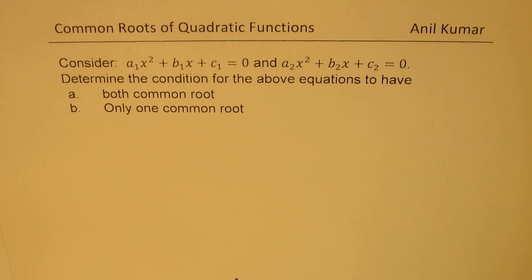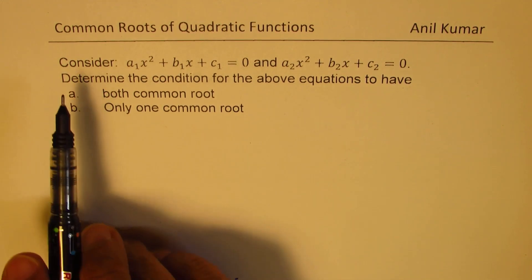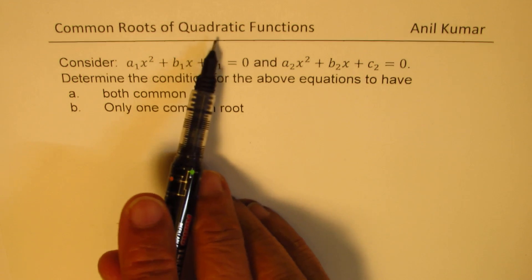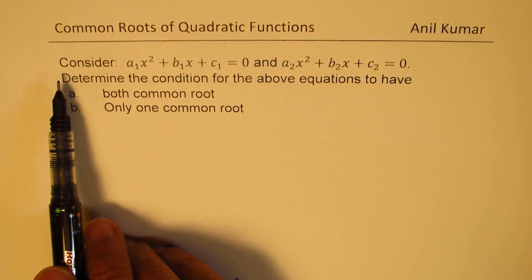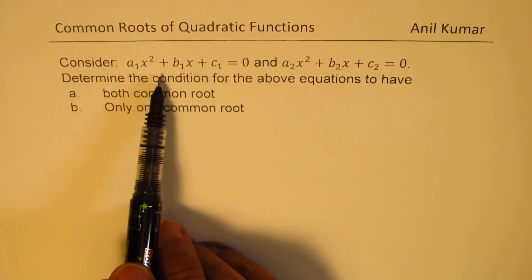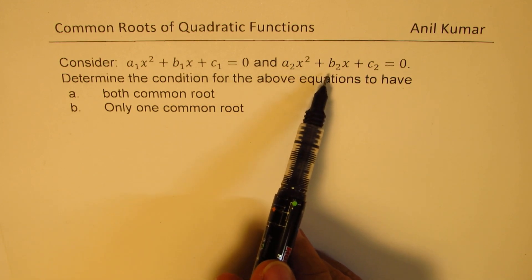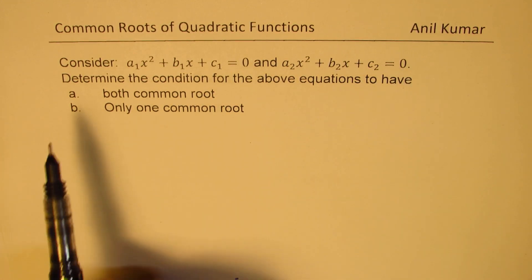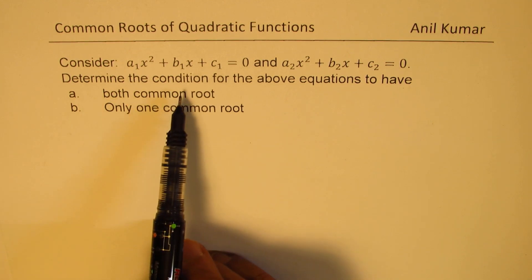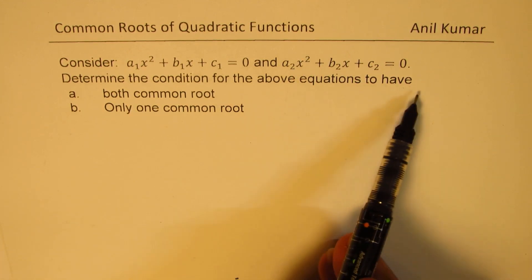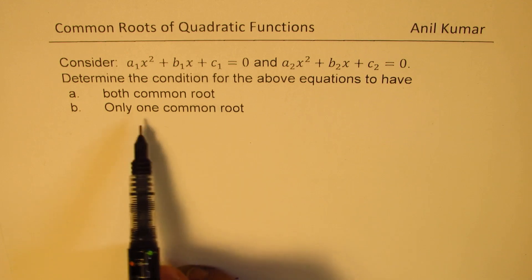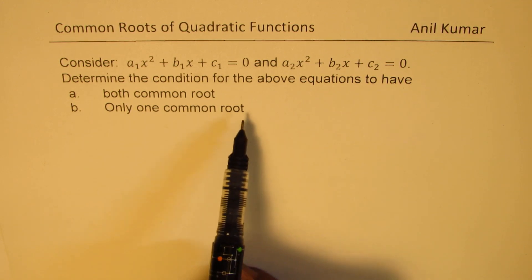I am Anil Kumar. Welcome to my series on polynomials. Here we are going to take a very interesting question regarding common roots of quadratic functions. Consider a1x² + b1x + c1 = 0 and a2x² + b2x + c2 = 0. Determine the condition for the above equations to have both common roots and only one common root.